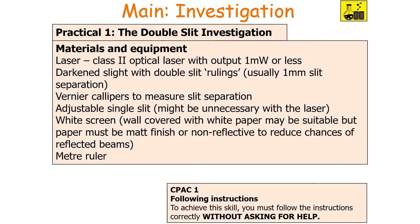For the first practical — the double slit investigation — the materials you'll need are: a laser, a double slit ruling (usually with about a one millimetre separation), vernier callipers to measure the slit separation, an adjustable single slit (though that may not be necessary if you have a laser), a white screen, and a metre ruler.